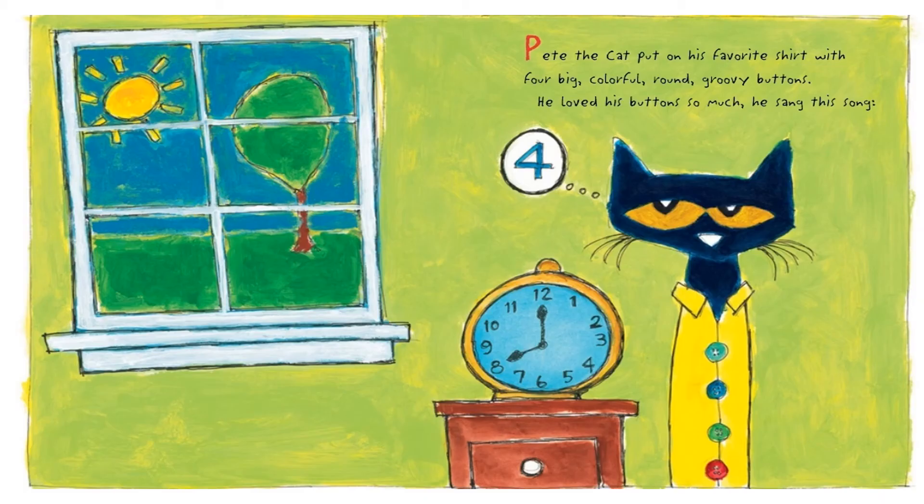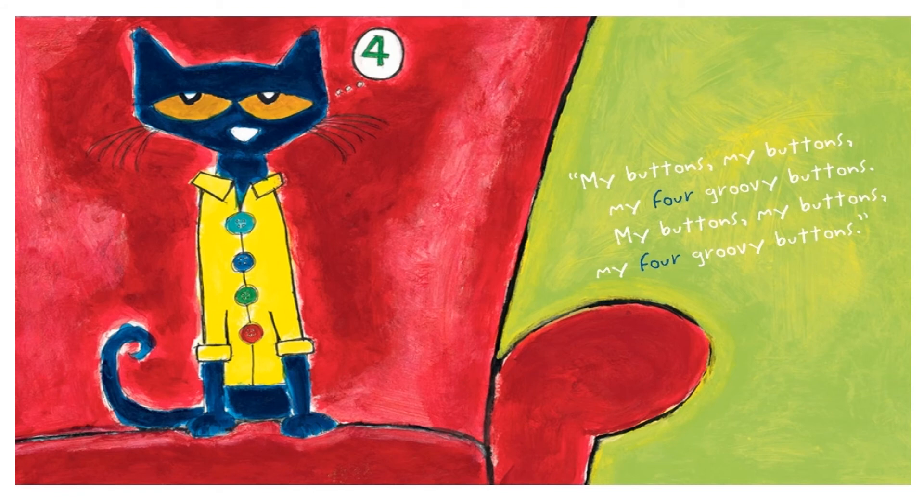Pete the Cat put on his favorite shirt with four big colorful round groovy buttons. He loved his buttons so much, he sang this song. My buttons, my buttons, my four groovy buttons. My buttons, my buttons. My four groovy buttons.